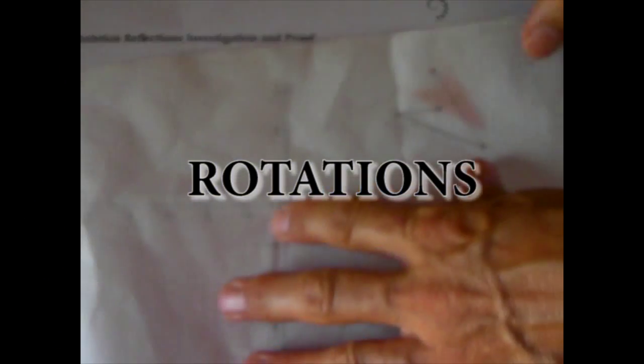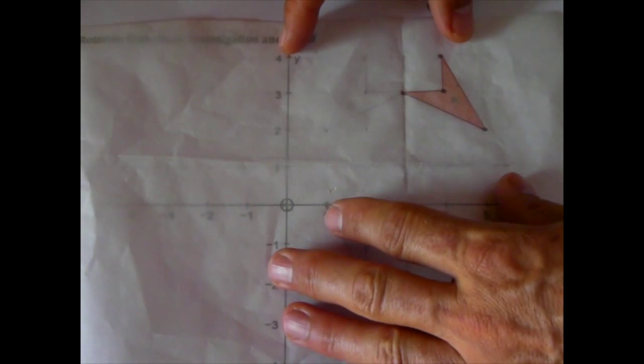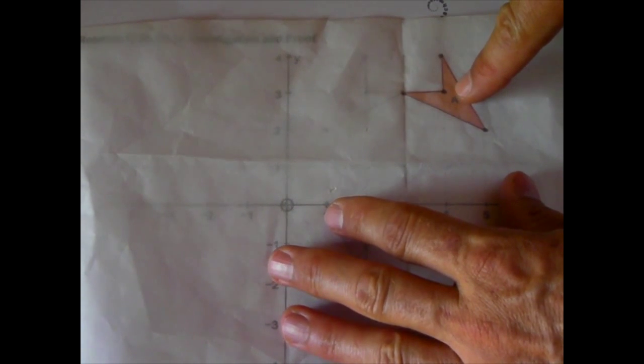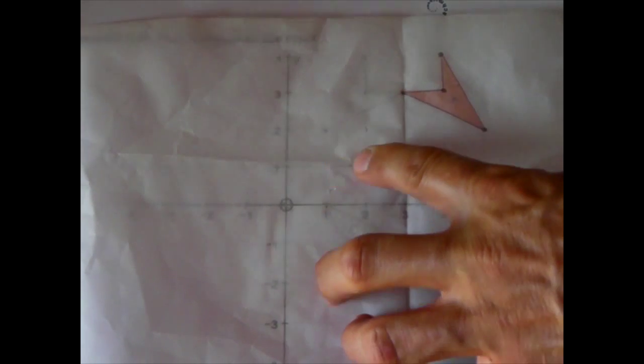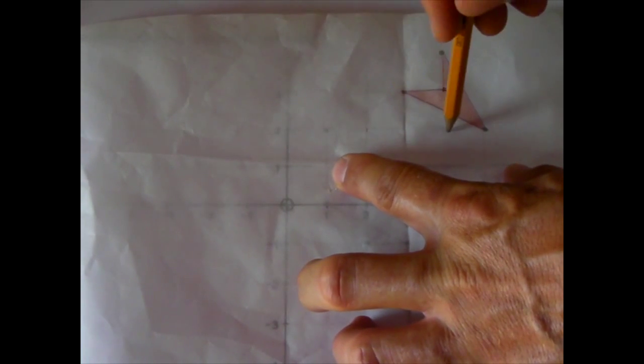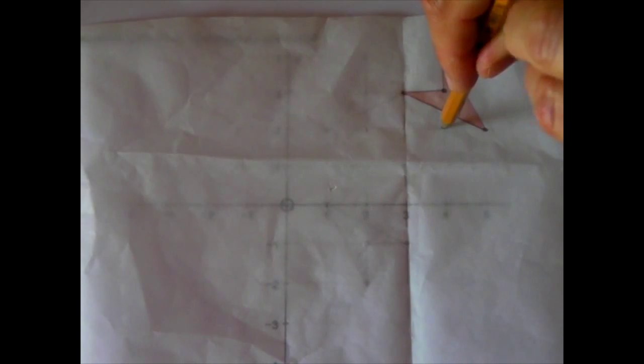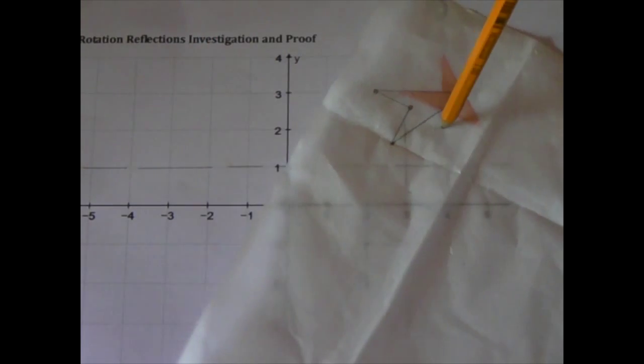So rotations. I place my image, my tracing right over the object as well as I can. And I'm going to stab my pencil in, and where I stab my pencil, that would be the center of rotation. I'm going to try here.